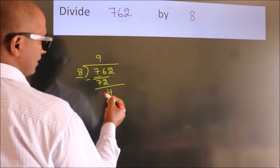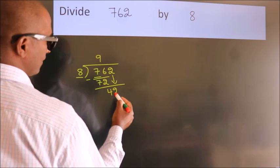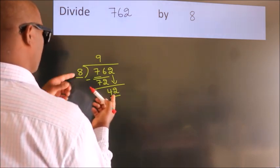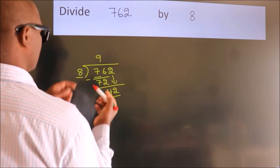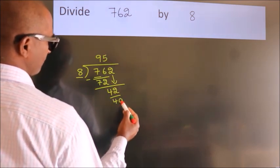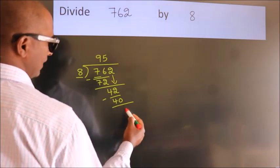After this, bring down the beside number. So, 2 down. So 42. A number close to 42 in the 8 table is 8 fives, 40. Now we subtract. We get 2.